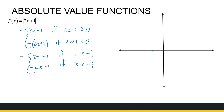So now things are happening around minus a half. We have the line two x plus one — gradient of two, cutting the y-axis at one — for x values greater than or equal to minus a half. And minus two x minus one for x values less than minus a half. And that is the absolute value function.